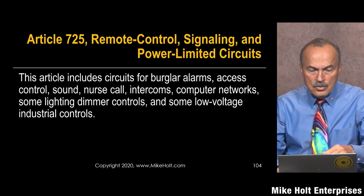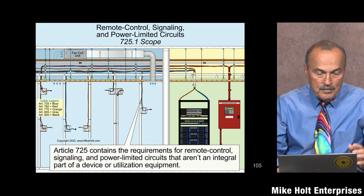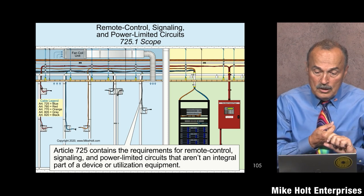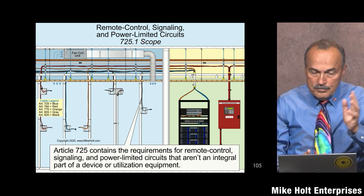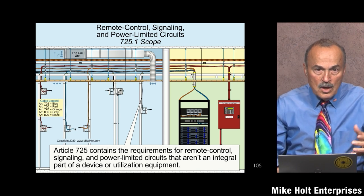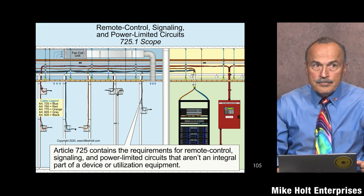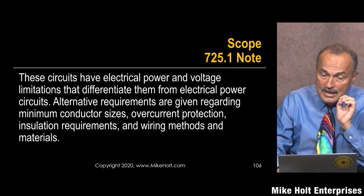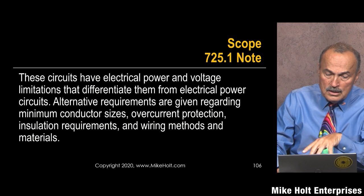I'm not going to get into burglar alarms, access control, nursing call, intercoms, computer networks, lighting dimming controls, or low voltage industrial controls. Article 725 contains the requirements for Class 1, Class 2, and Class 3 circuits that aren't an integral part of a device or utilization equipment. If something has its own internal wiring, that's covered under 110.2 and 90.7. These circuits have electrical power and voltage limitations that differentiate them from electrical power circuits, with alternative requirements for conductor size, overcurrent protection, installation, and wiring methods.